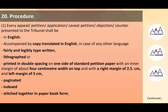Now we move on to institution of proceedings — petitions and appeals. This part deals with procedure, which is slightly important. Every appeal, petition, application, caveat, or objection presented shall be in English. If there is any document in another language, it should be accompanied by a copy translated in English. All documents must be fairly and legibly typewritten, lithographed, or printed in double spacing on one side of the standard paper.